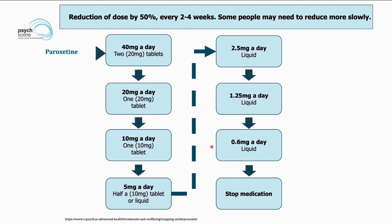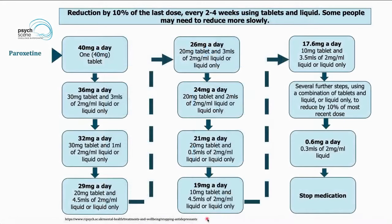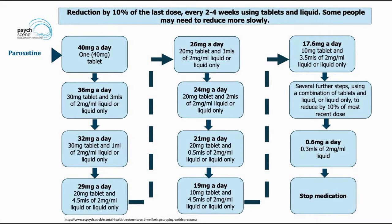In some countries tapering strips are also available, or compounding formulations can be utilized. From 5 mg/day you go to 2.5 mg liquid, then to 1.25 mg, then to 0.6 mg, and finally stop. A second approach is reducing by 10% of the last dose every two to four weeks using tablets and liquids — for individuals who are very sensitive. From 40 mg you go to 36 (using a 30 mg tablet plus 6 mg liquid), then to 32, 29, 26, and so on until stopping.